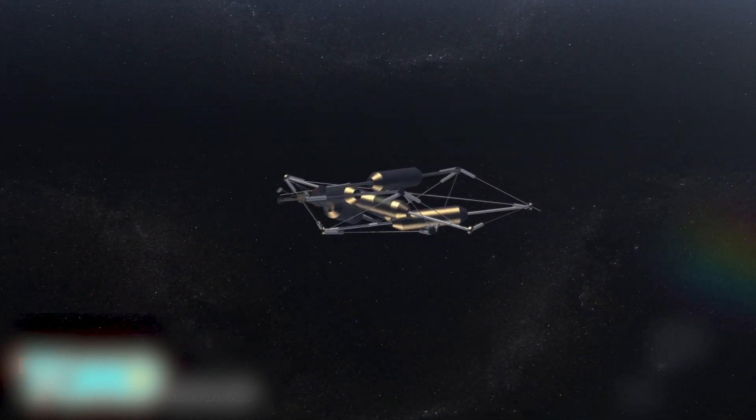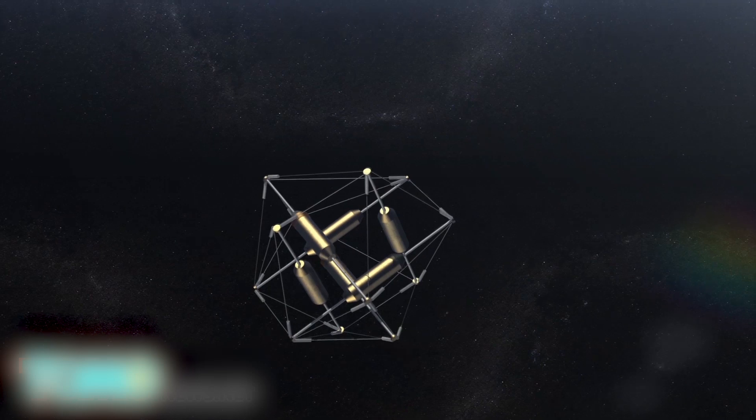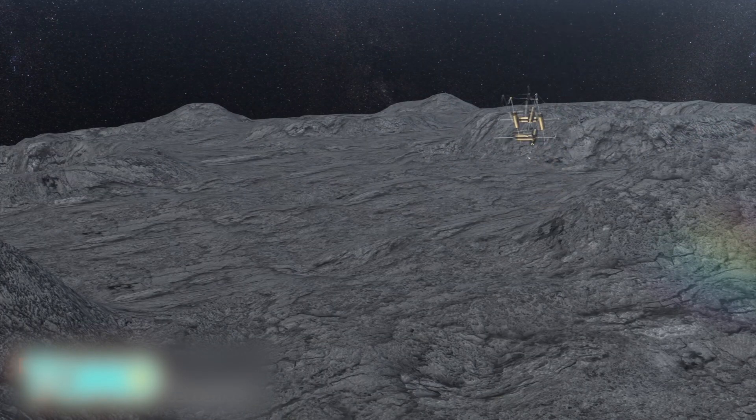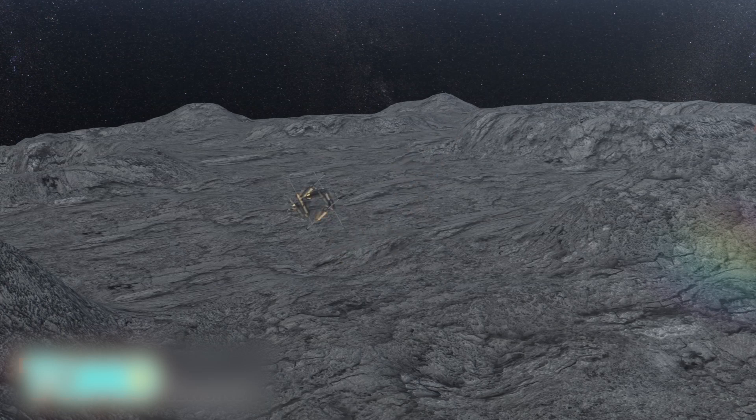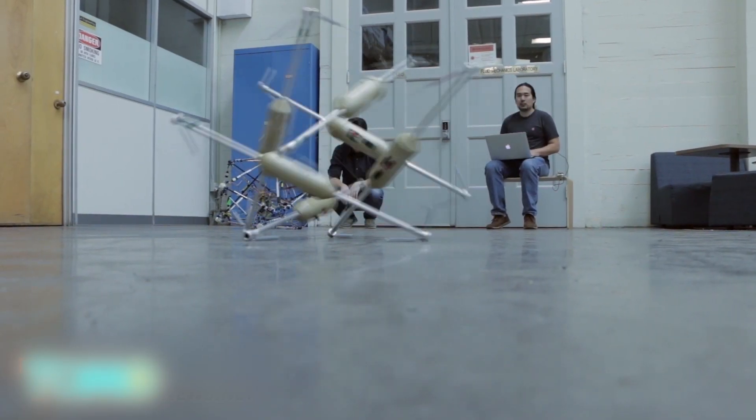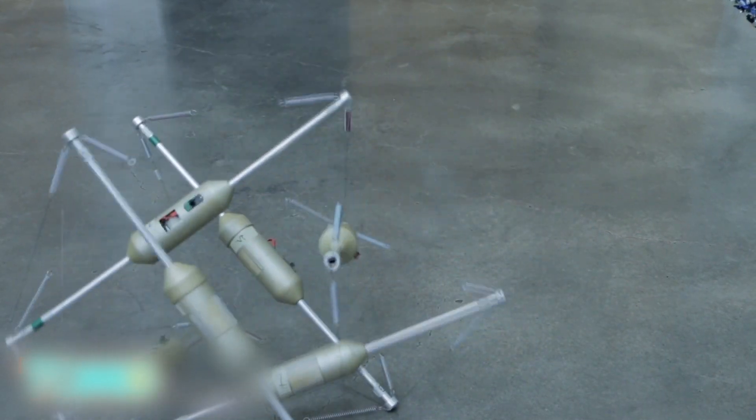Agogino says their target mission is either the Moon or Titan, which is one of Saturn's moons. In addition to space exploration, researchers are also finding ways to use these robots on Earth. We're also exploring applications where, in fact, the aircraft itself might be a tensegrity that can fly through the air, drop on the ground, and actually conduct some kind of search and rescue or delivery of emergency supplies.